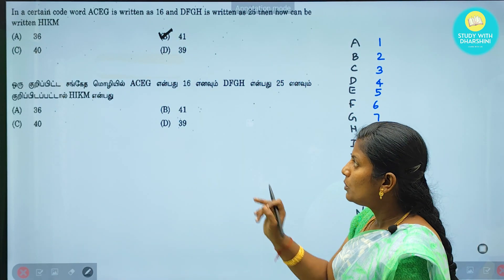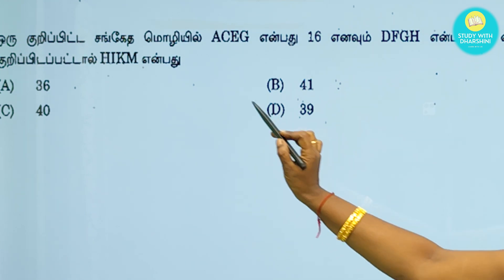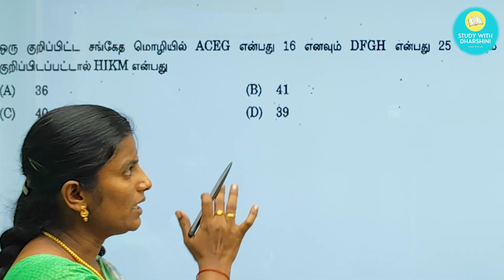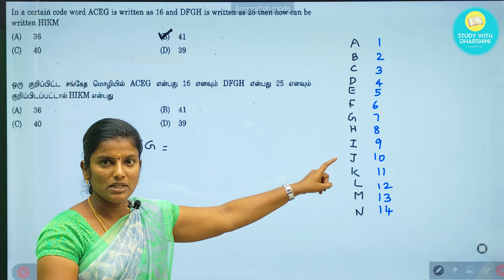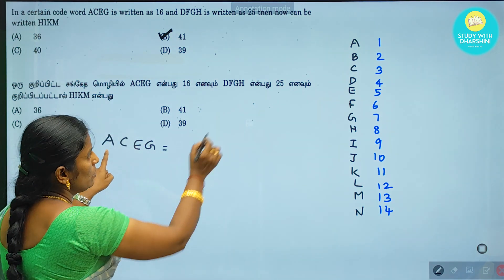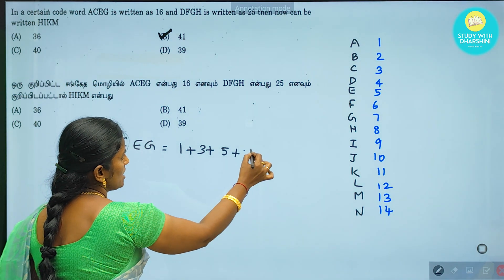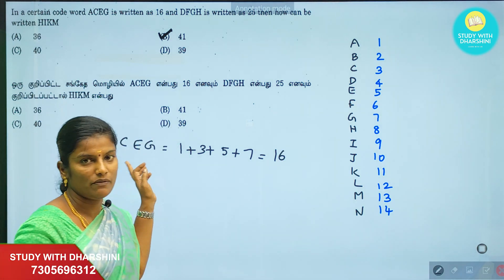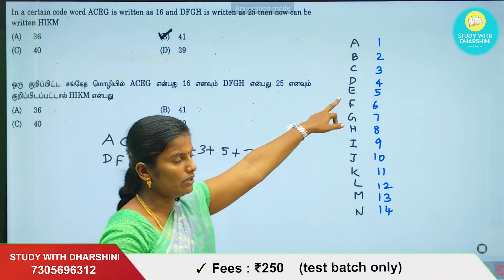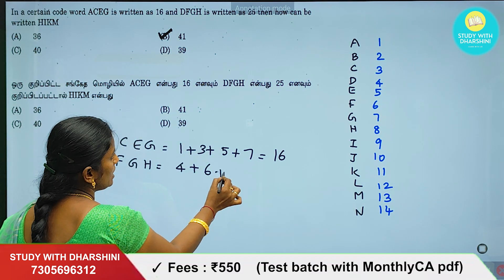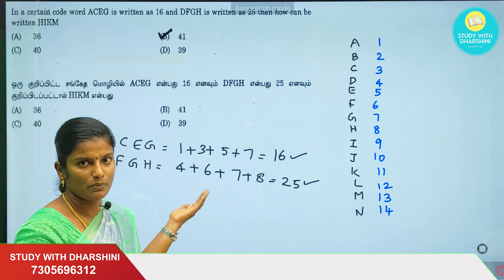So next question. A, C, E, G — the number is 14. D, F, G, H — the number is 25. We can write the first letters: A is the first letter — 1. C is the third letter — 3. E is the fifth letter — 5. G is the seventh letter — 7. If you add everything: 1+3+5+7 equals 16. This is your first condition. Second condition: D is the fourth letter, F is the sixth, G is the seventh, H is the eighth. If you add this: 4+6+7+8 equals 25. The condition is satisfied.